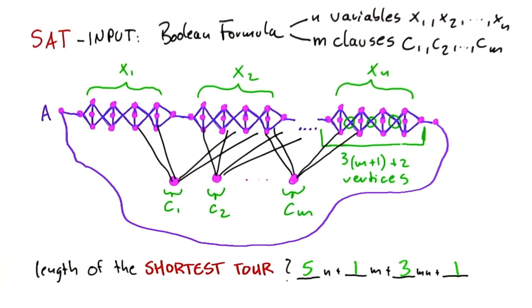And that length is achievable if and only if the Boolean formula is satisfiable. We're done. We have reduced SAT to shortest tour and shown that shortest tour is in NP, so our final conclusion is that this problem is NP-complete. It's a bit ironic that showing a problem is NP-complete can sometimes feel like solving an NP-complete problem itself. That's why I'd like to show you how to further simplify proofs that problems are NP-complete.